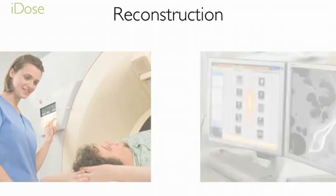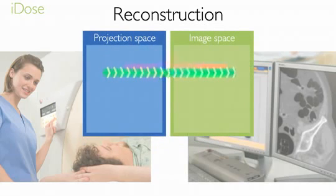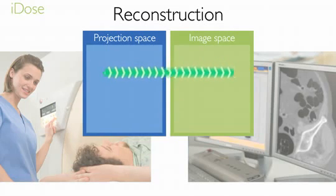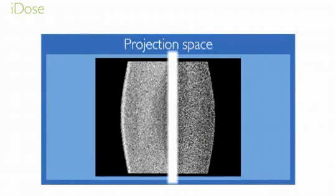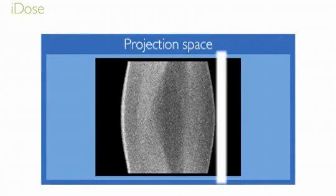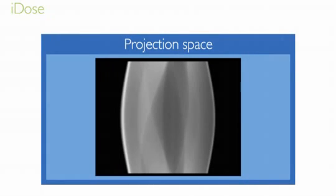Reconstruction is the process of converting acquired data into images — that is, it is the process of transitioning the data from the projection space to the image space. Eidos uniquely takes advantage of the inherent properties found in each space. In the projection space, noise is removed iteratively from each unique projection. This step is critical as noise present in the projections would ultimately translate into streaks on the final images. Without Eidos, these streaks are often seen in low dose imaging.